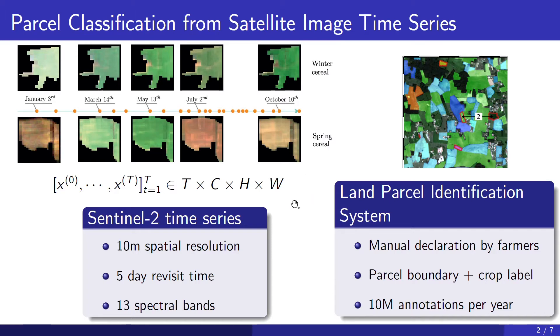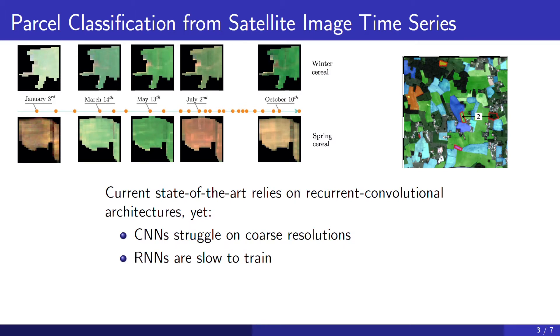The current state of the art for this task relies on recurrent convolutional architectures to address the spatiotemporal nature of the data. Yet CNNs struggle on the coarse resolution of Sentinel-2 images where not much texture is present. And additionally, RNNs are notoriously long to train, especially for long sequences of images. So in this work, we propose two modules that circumvent both those limitations.